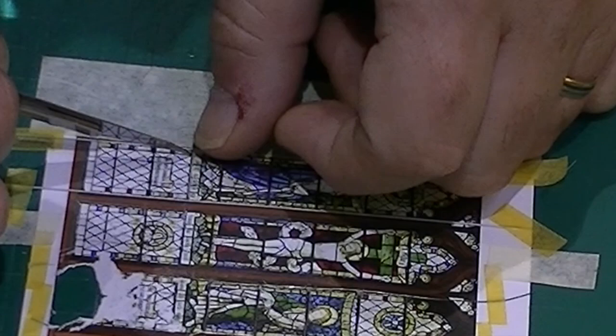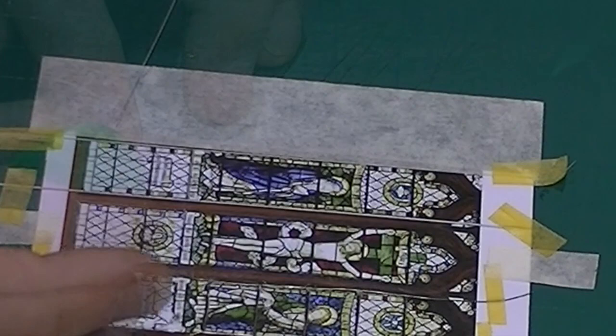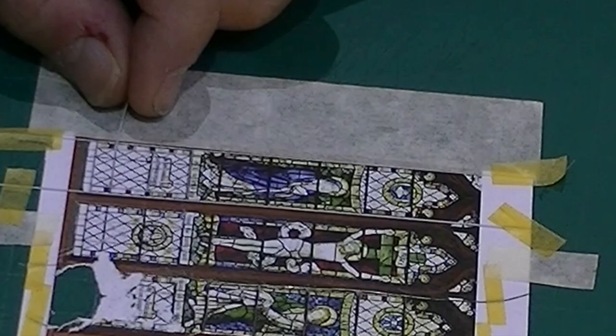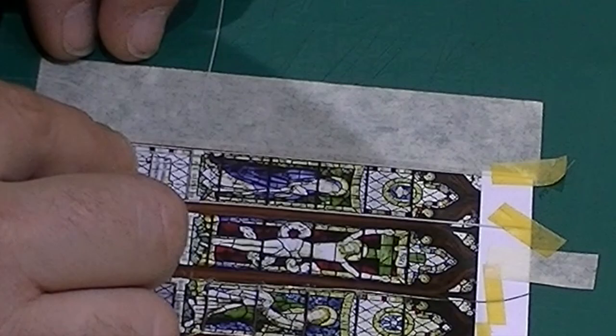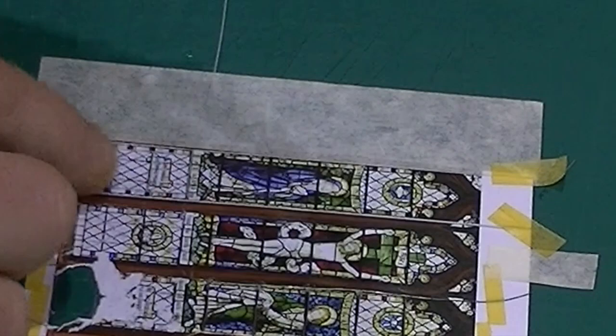The reason for using the colored photocopies is not only to follow the pattern but also it gives me the opportunity for any excess glue to be soaked up with that paper. So this is just a very long task of fitting in piece by piece and following the pattern of the window beneath.